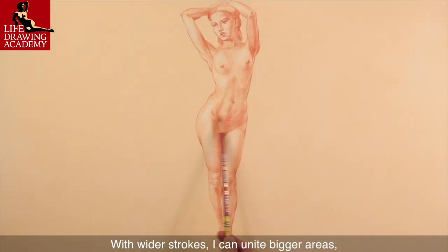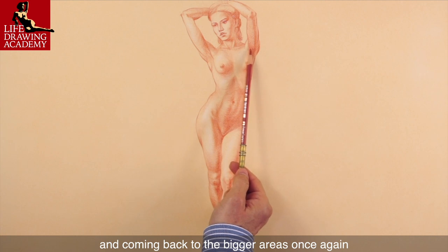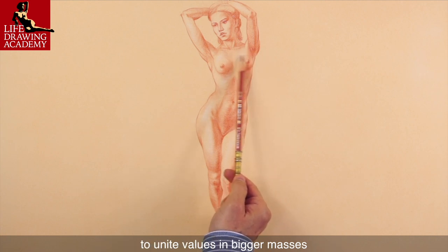With wider strokes, I can unite bigger areas, so rendering does not look patchy. Such cycles can be repeated several times, first rendering big areas, then working on details, and coming back to the bigger areas once again to unite values in bigger masses.